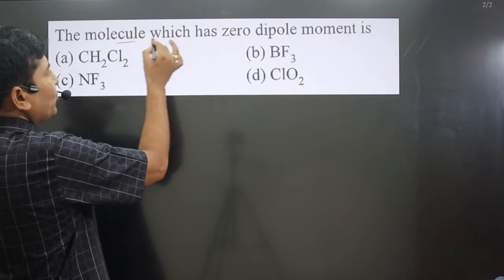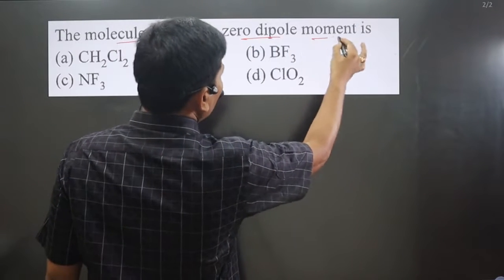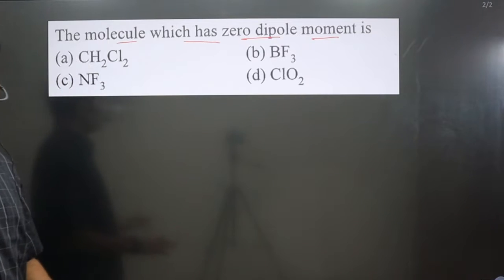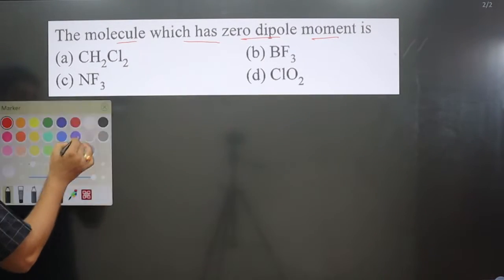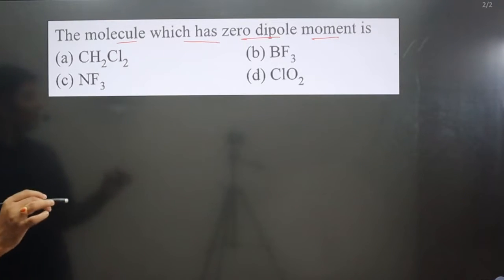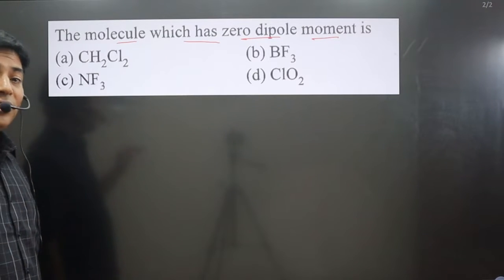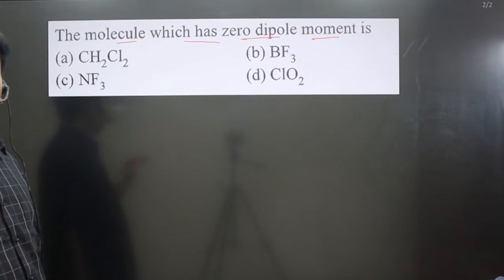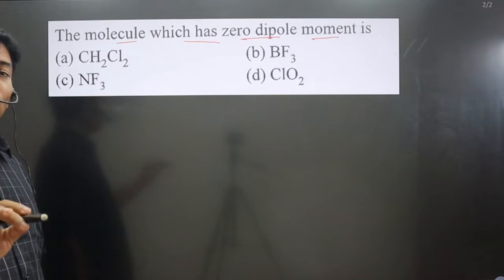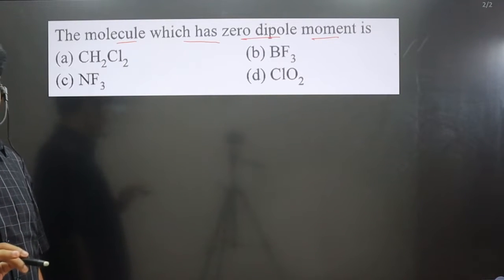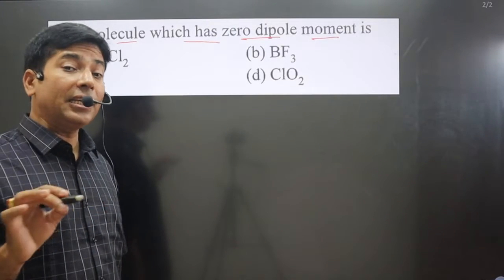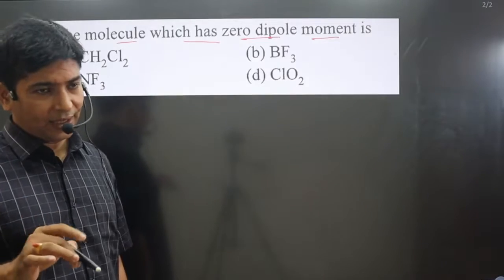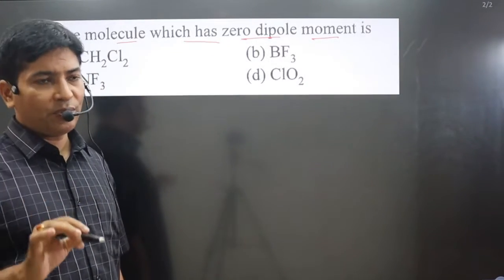The question asks which molecule has zero dipole moment — in other words, which molecule is nonpolar by nature. Always keep in mind: if a molecule has regular geometry, as we learn under hybridization, its dipole moment will always be zero. Regular geometry includes tetrahedral, trigonal planar, linear, trigonal bipyramidal, and octahedral.